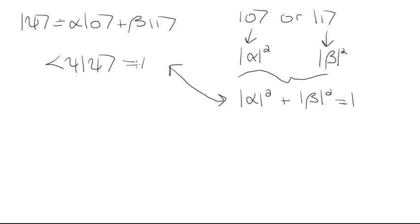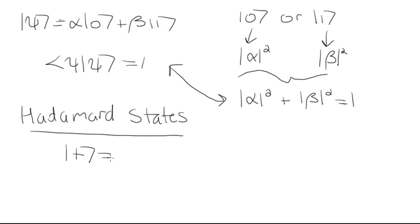So two other useful states are the Hadamard states. We write them in the following way: |+⟩ is equal to 1 on root 2, |0⟩, now this is where the plus comes in, plus |1⟩.